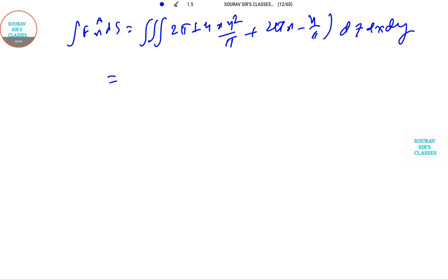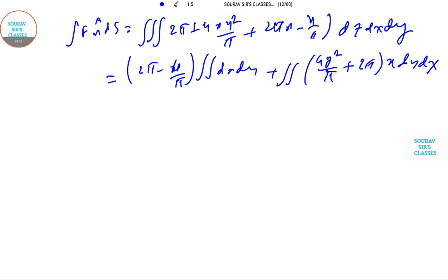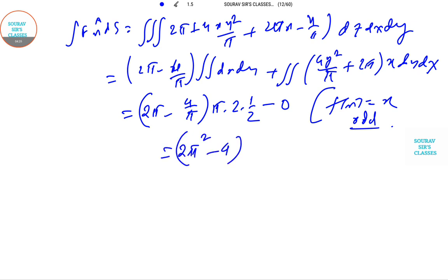After the integration, this is 2π minus 4/π outside. This will be double integration dx dy plus double integral (4y²/π + 2πx)dy dx. You can put the value right here: (2π - 4/π)·π·(2 - 0)/2. This is happening because x is an odd function. 2π² - 4. The answer to the question is option number B. This was a challenging question.